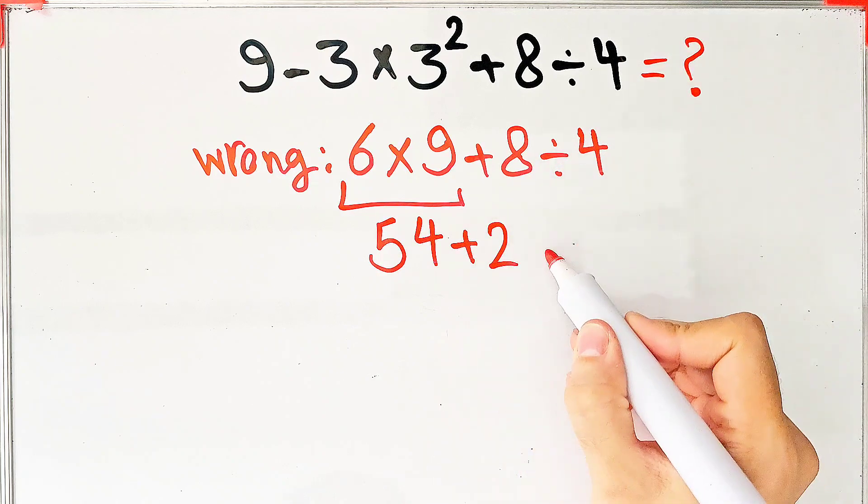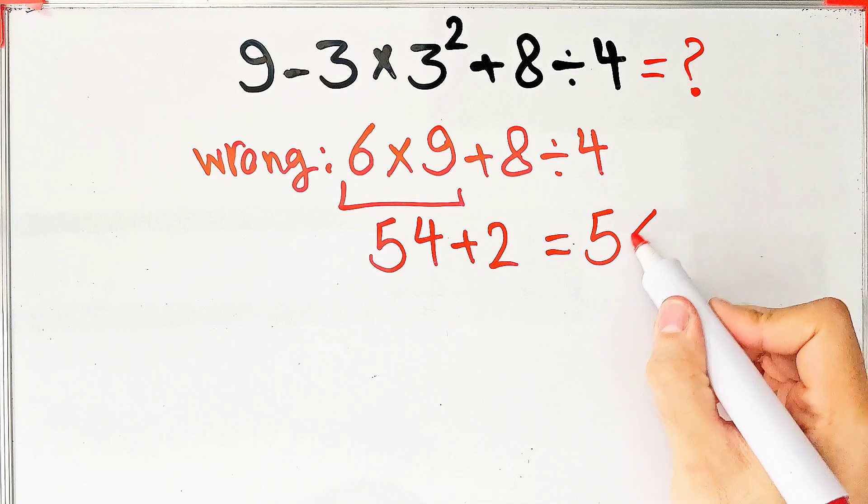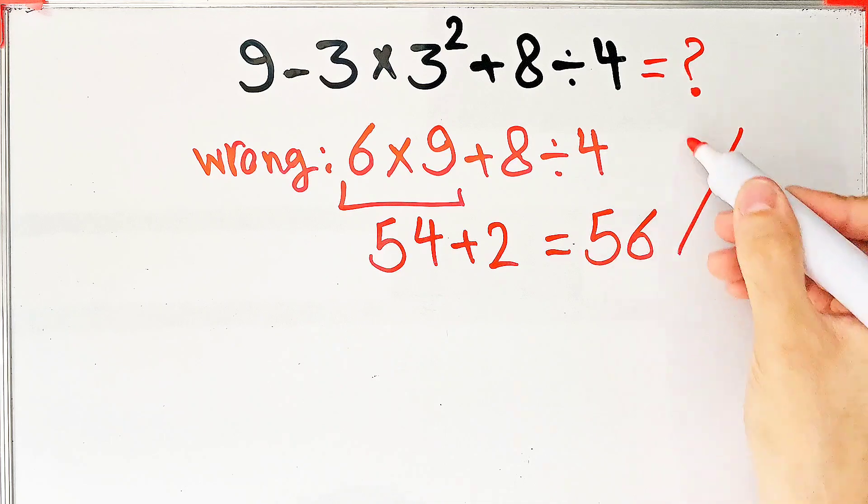8 divided by 4 equals 2, and 54 plus 2 equals 56. But this answer is definitely wrong.